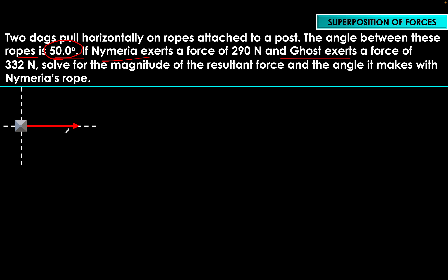In terms of strategy, I would choose to put Nymeria along the positive x-axis. The reason is that the problem asks us to find the angle the resultant force makes with respect to Nymeria's rope. It makes sense to put Nymeria along the positive x-axis because we normally use the positive x-axis as our reference when measuring angles, and Nymeria is our reference here.